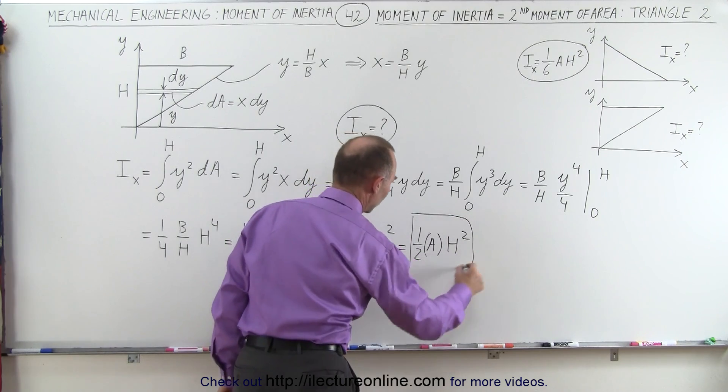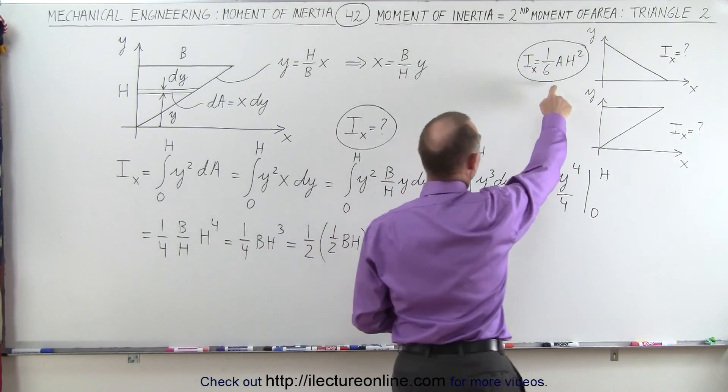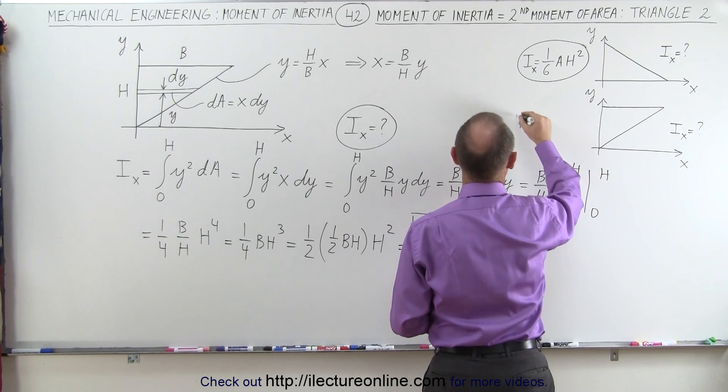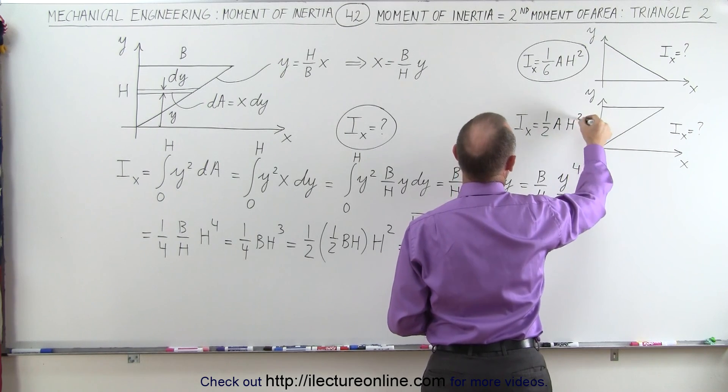Now, let's compare that to the result we got in the previous video. In the previous video, we ended up with this. So here, now we can write that I sub x is equal to 1 half the area times h squared.